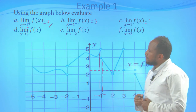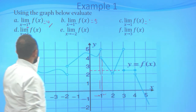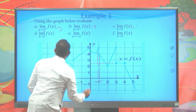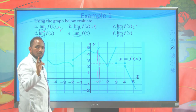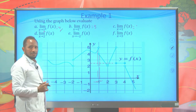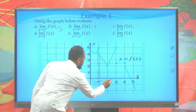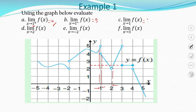Now let's see part D: the limit of f(x) when x approaches 2. We need to check both right-side and left-side limits. The right-side limit, when you approach from the right, approaches 2. From the left side of 2, the function also goes to 2. Since both the left-side and right-side limits are equal and equal to 2, the limit exists and equals 2.